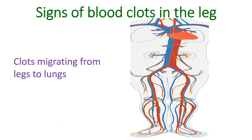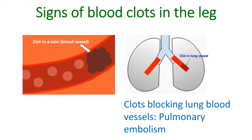Clots in the veins can migrate to the lungs and produce pulmonary embolism — a potentially fatal condition if it is massive. Clots travel from the blood vessels of the legs through blood vessels of the tummy into the heart and then the lungs. Clots blocking the blood vessels of the lungs produce breathlessness, fall in blood oxygen levels, fall in blood pressure, and sometimes chest pain. This needs emergency treatment.